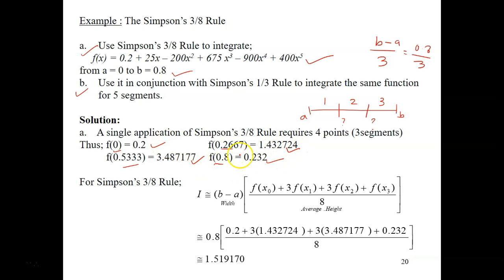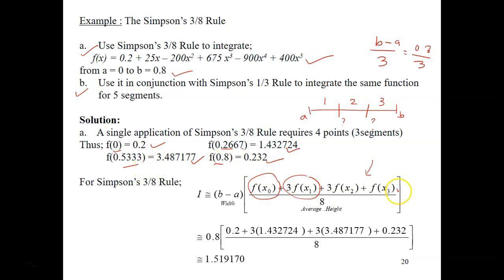Now that you have all the values, you can plug them into the 3/8 formula. The first term is for the first point, the second term is for the second point, the third term is for the third point, and the last term is for the last point. You substitute them all in and get your answer.